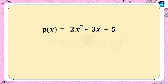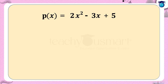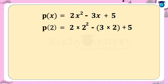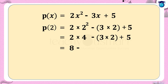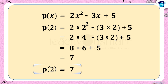When x equals 2, we get p(2) = 2 multiplied by 2 squared minus 3 multiplied by 2 plus 5, equals 2 multiplied by 4 minus 3 multiplied by 2 plus 5, equals 8 minus 6 plus 5, equals 7. Hence the value of the polynomial is 7 when x equals 2.